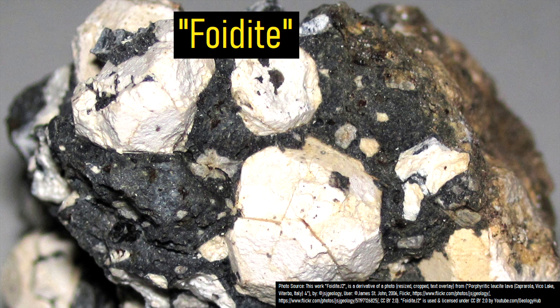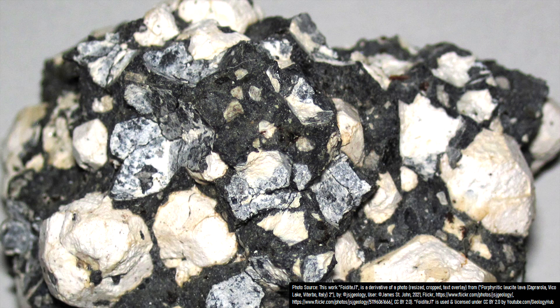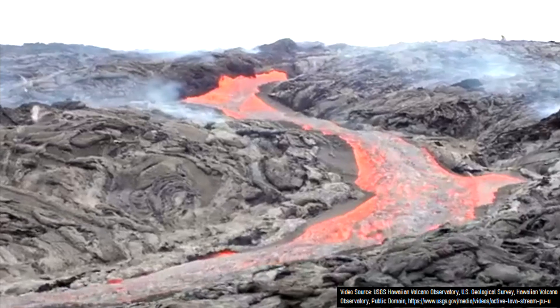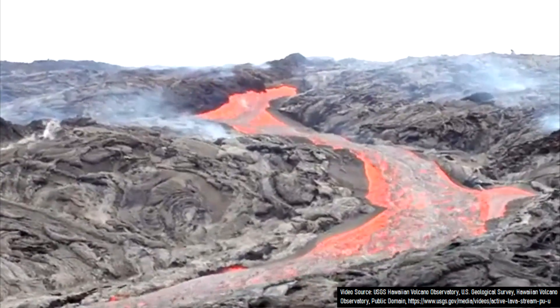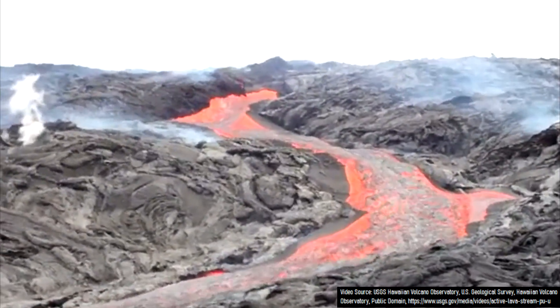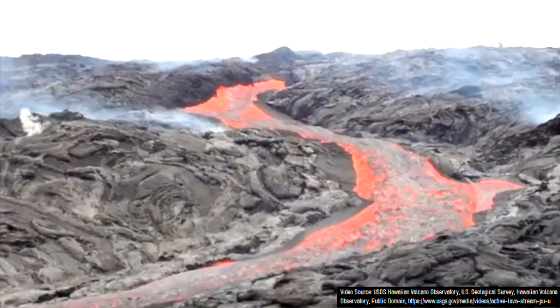A rock type known as foidite contains 60% or more by weight of foids. Foids, or feldspar crystals, often have a generally white color in foidite, and this type of lava is often unusually low viscosity, which can on occasion move at speeds beyond 30 kilometers per hour.